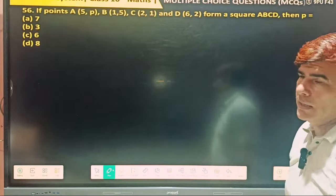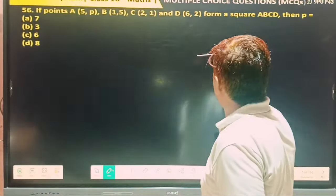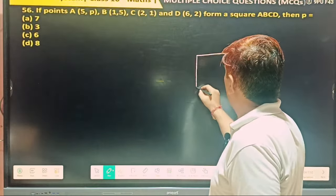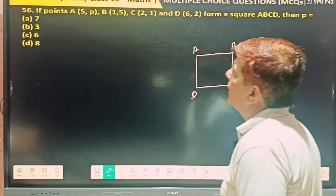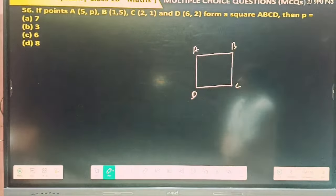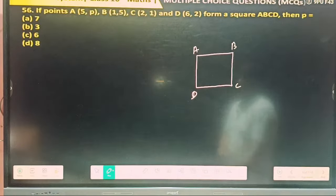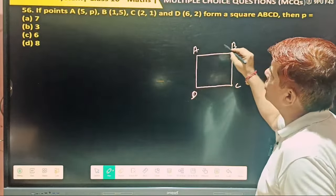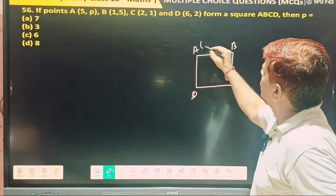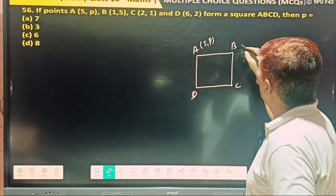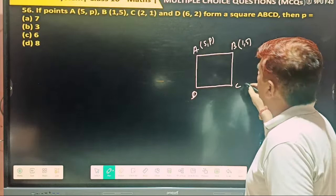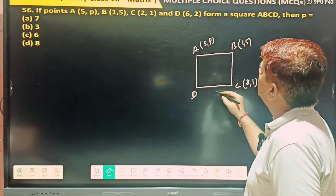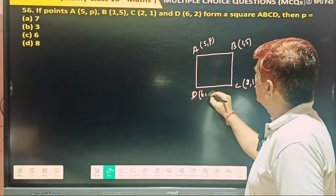So again like this, same question repeating. ABCD is what? Square. And square is a quadrilateral whose all sides are equal and each angle is equal to 90 degrees. And all squares are parallelograms, so diagonals also bisect each other. And this angle 90 degrees, then this also we can find out. So what's A point whose coordinates are 5 and P? B is a point whose coordinates are 1 and 5. C is a point whose coordinates are 2 and 1. And D is a point whose coordinates are 6 and 2.